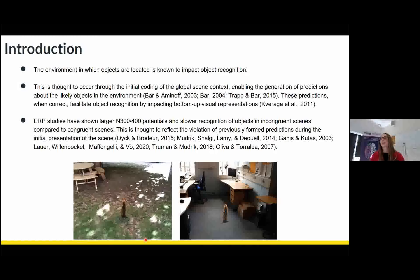And these predictions can help us recognize objects quickly. However, when these predictions are violated, such as seeing a beaver in an office environment, our ability to recognize the object slows down. And this has been shown through various behavioral neuroimaging studies, showing slower response times to objects that are inconsistent with the environment, compared to objects consistent with the environment.